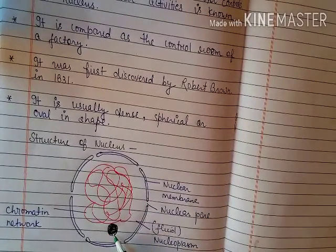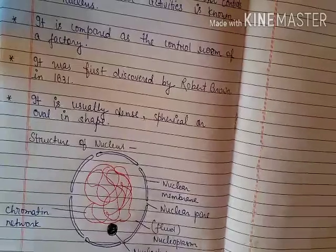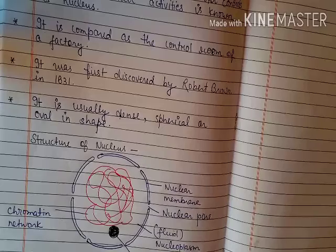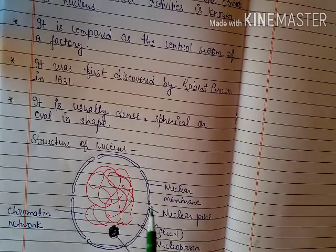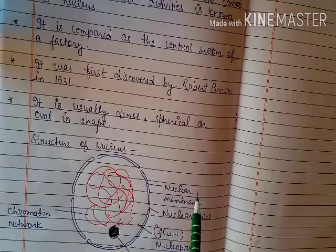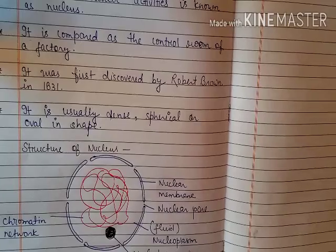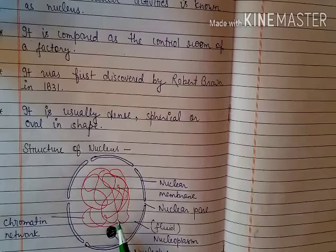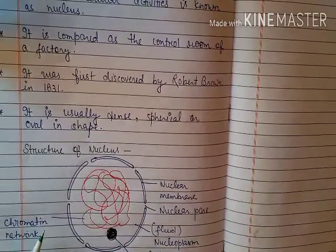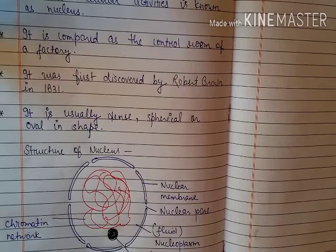Inside the nucleoplasm there is a dense rounded body, and that is known as nucleolus. So a nucleus has four main components: the outermost boundary of the nucleus is known as the nuclear membrane; inside the nuclear membrane is a fluid called nucleoplasm; the thread present in the form of an entangled mass is known as chromatin network; and the dense rounded body found inside the nucleoplasm is known as nucleolus.